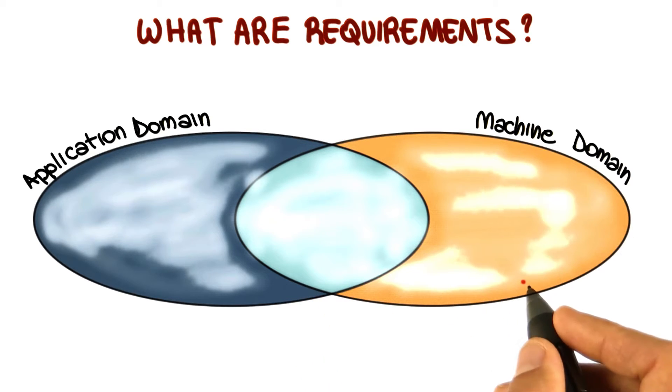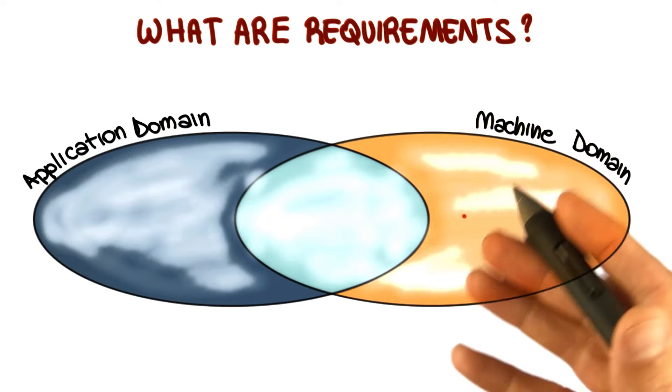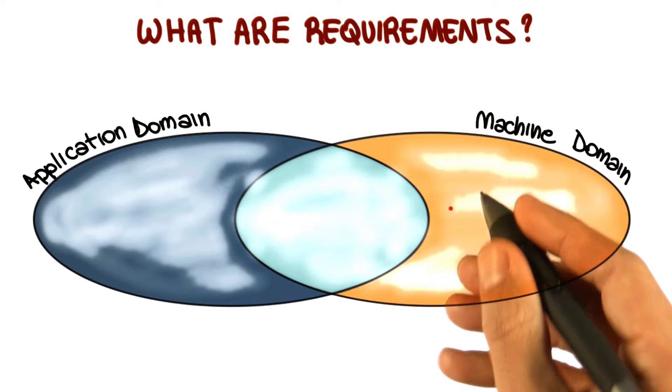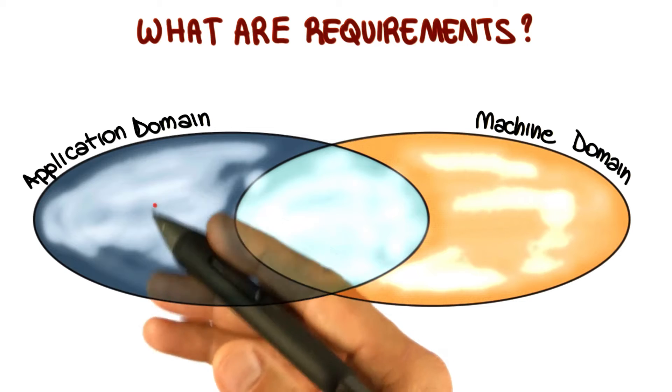At a high level, this diagram contains two main parts: the domain of the machine, which is the hardware, operating system, libraries, and so on, on which the software will run, and the domain of the application, which is the world in which the software will operate.